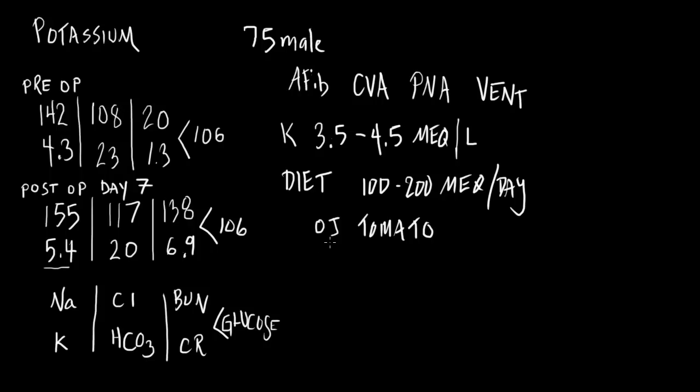What are some foods that contain high potassium? Orange juice, tomato juice, tomato sauce—those are intracellular foods. Banana is one of those things people always think about. A standard banana is about 10 milliequivalents. So eat 10 bananas and you've got your potassium intake for the whole day.